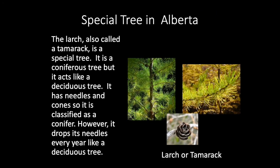We have a special tree in Alberta called the larch or tamarack. It's a coniferous tree, but it acts like a deciduous tree. It has needles and cones, so it's classified as a conifer. However, it drops its needles every year like a deciduous tree.